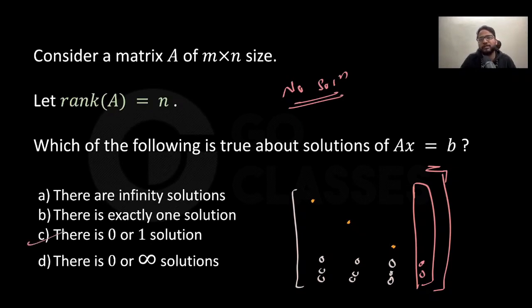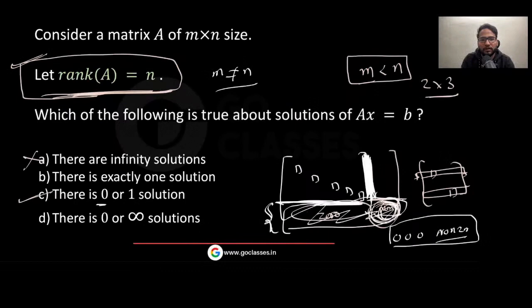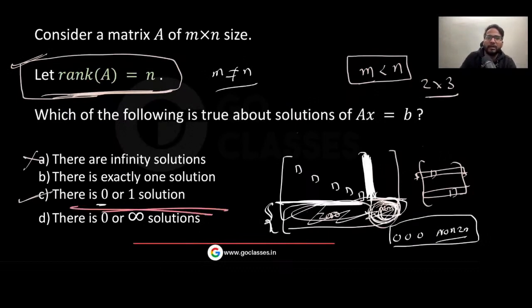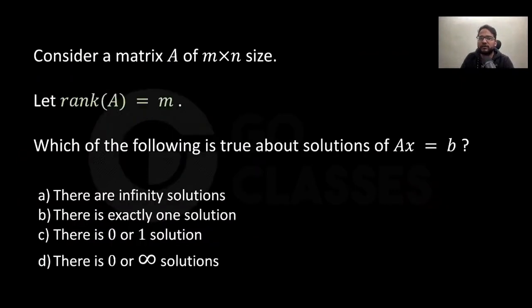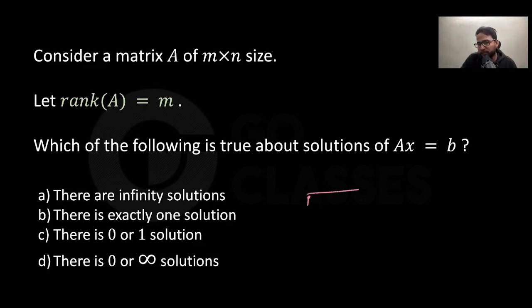So the answer is C: either zero solutions or exactly one solution. Now let's move on. If the rank of A is m, that means every row has a pivot.